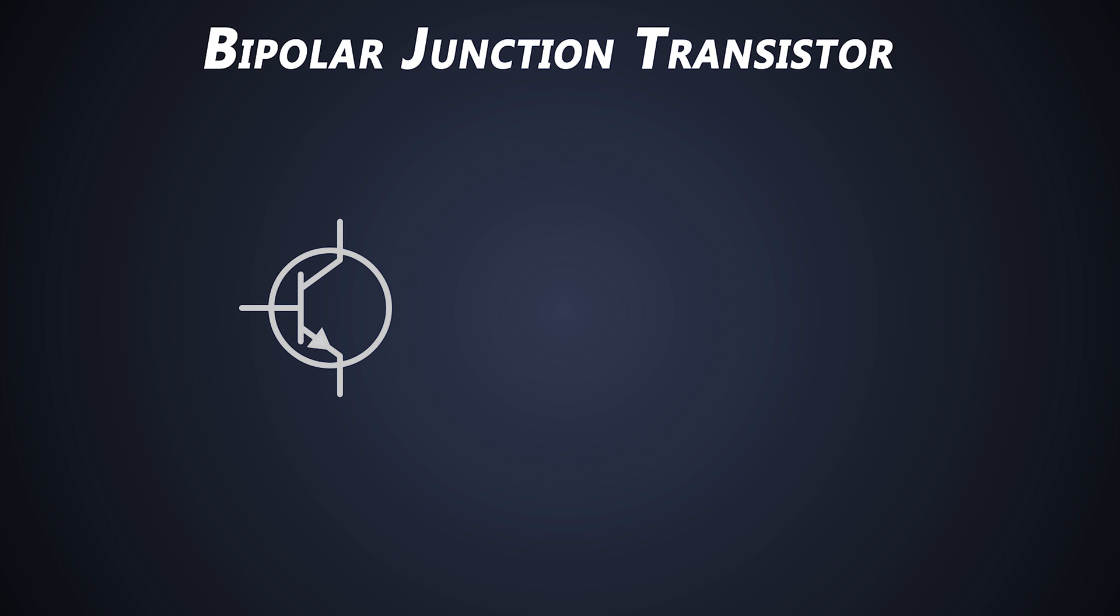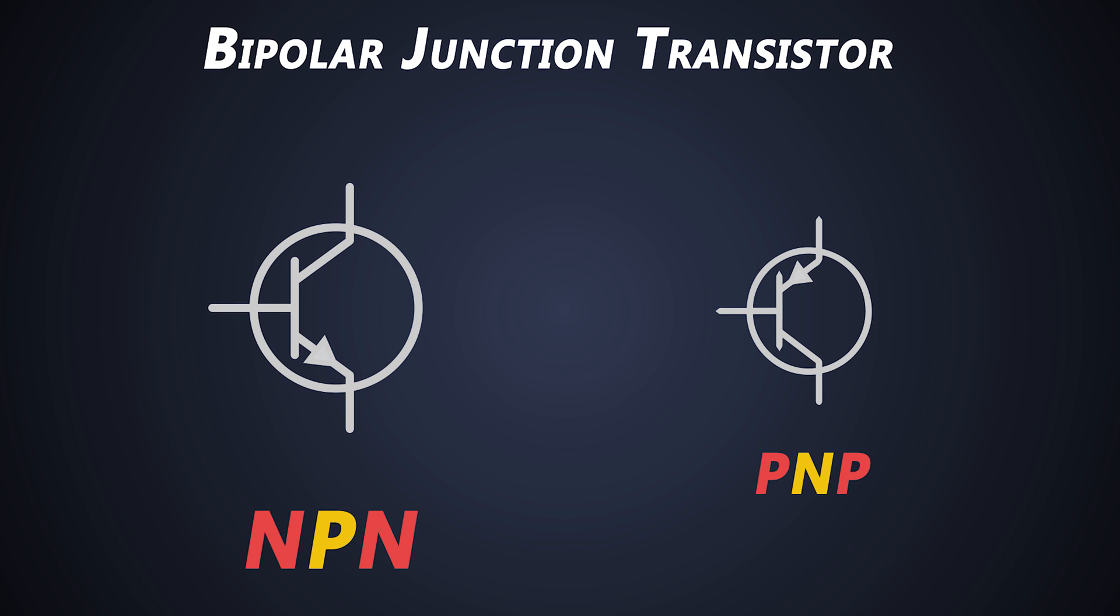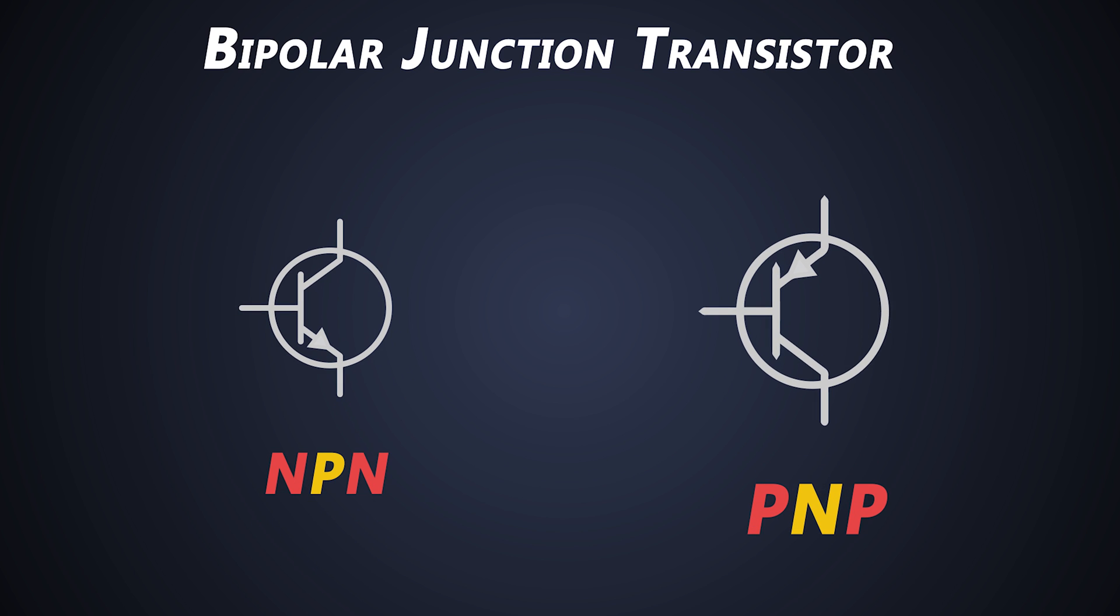There are two types of transistors which are NPN BJT and PNP BJT, and these are the symbols. This is an NPN transistor and this is a PNP transistor.